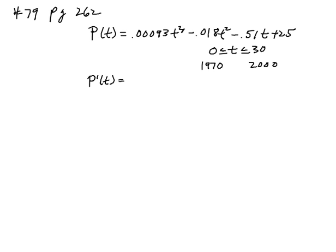A polynomial taking the derivative term by term. I'll multiply the .00093 by 3, I'll get .00279 and then drop the exponent by 1, t squared. And then minus .036t and minus .51.